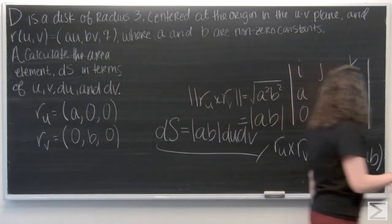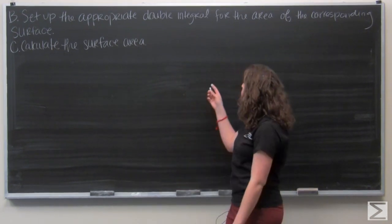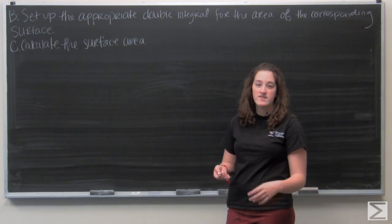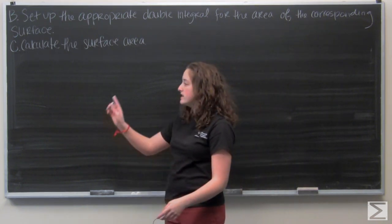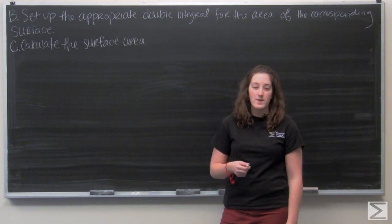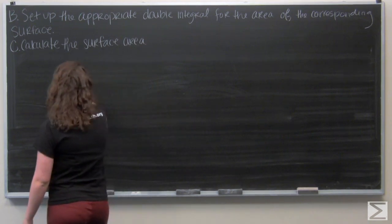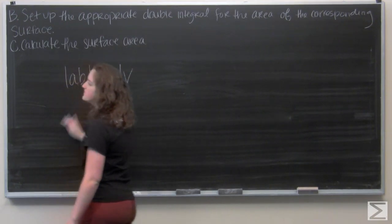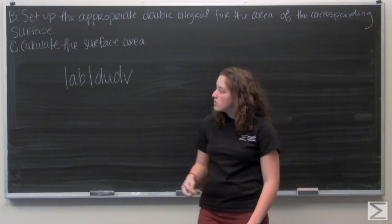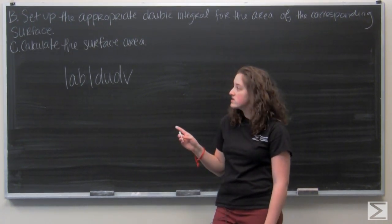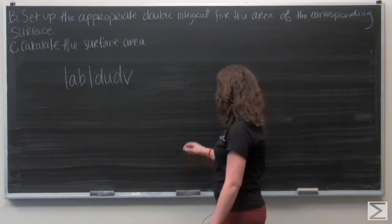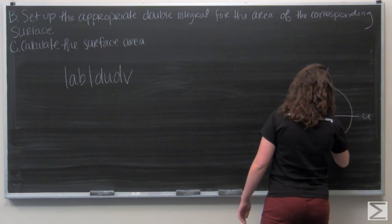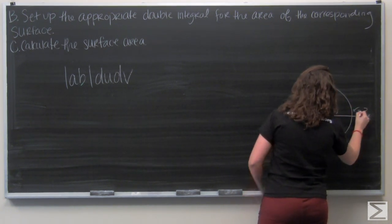Let's move on to part b. So b asks us to set up the appropriate double integral for the area of the corresponding surface. Well, to find surface area, we're going to integrate ds over the region. So I know the function that I'm integrating is going to be the ds I calculated in part a, the absolute value of ab times du dv. And now I need to set up bounds of integration that will match my region. So let's recall that the region is a disk of radius 3 centered at the origin in the UV plane.